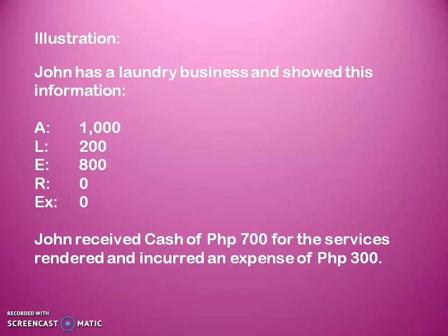So in accounting, every transaction has a dual, triple, or quadruple effect. But let's focus on the dual effect. For the first transaction, John received cash of P700 for the services rendered. That means there's an increase in cash since we received P700, and cash is an asset. So in asset, there's an increase of P700. And since we rendered the service, there's an increase in our revenue for P700. This is what I mean by a dual effect in one transaction — the first effect is an increase in asset, and the second effect is an increase in revenue.